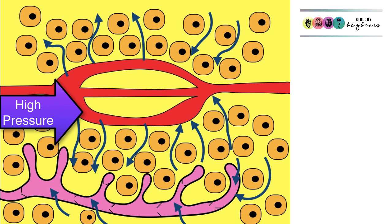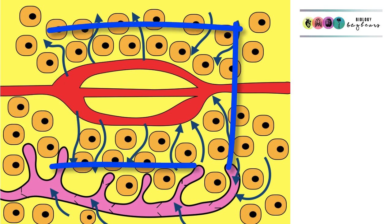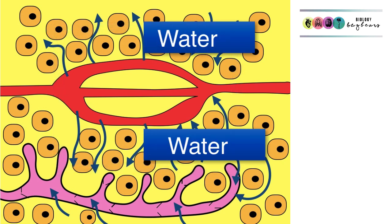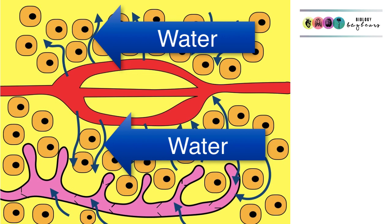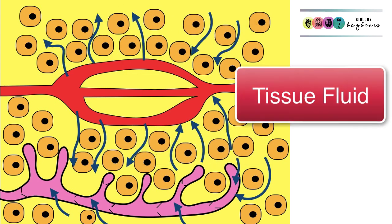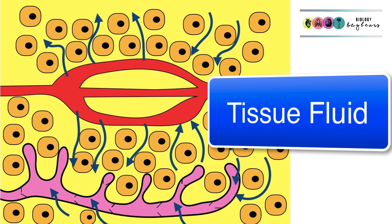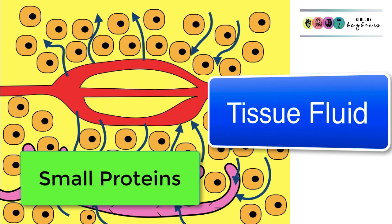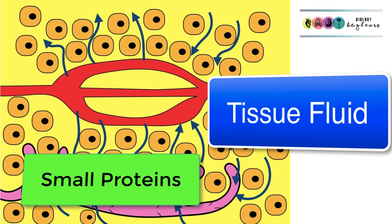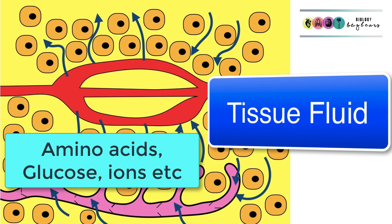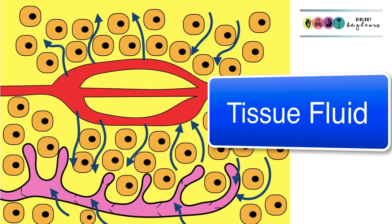The blood flow in the arterioles is under high pressure, and because the walls of the capillaries are leaky or porous, a lot of material comes out — mostly water. When this water surrounds the cells, it's known as tissue fluid, sometimes referred to as interstitial fluid or extracellular fluid. Other things come out as well, such as small proteins, and materials like glucose, amino acids, and ions are dissolved in that tissue fluid on their way to the cells.